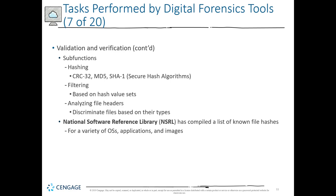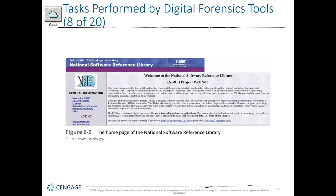Validation and verification normally involve hashing of some sort. The National Software Reference Library has compiled a list of file hashes for a known set of operating systems, applications, and images. A hash is a one-way calculation used for integrity purposes. Hashing produces a hexadecimal value that we can analyze.